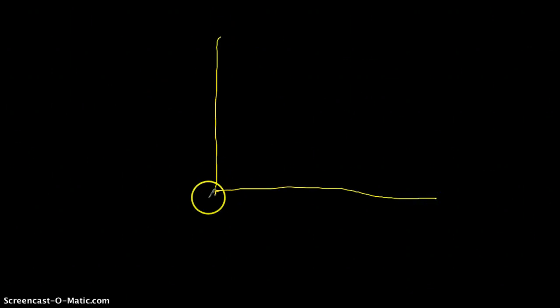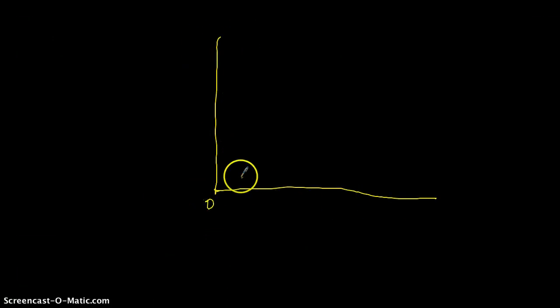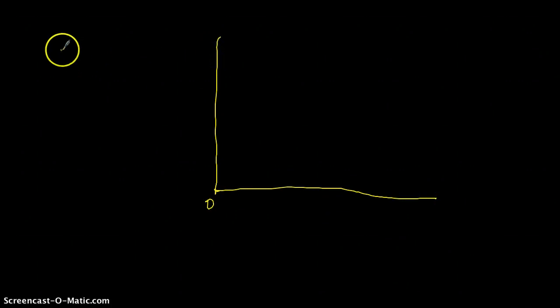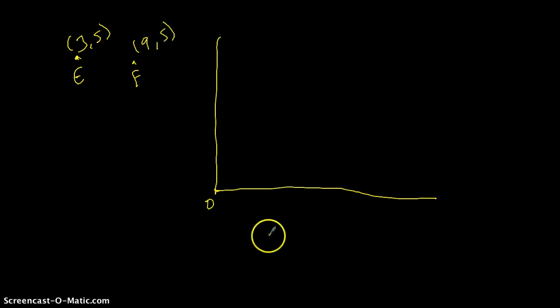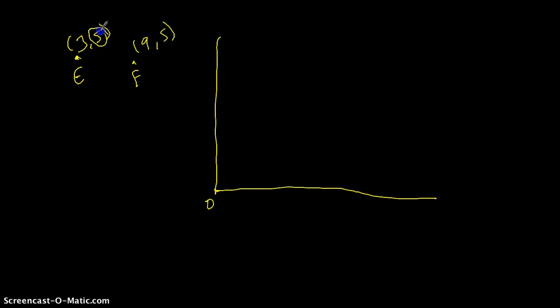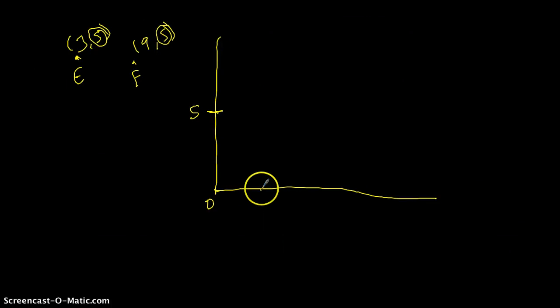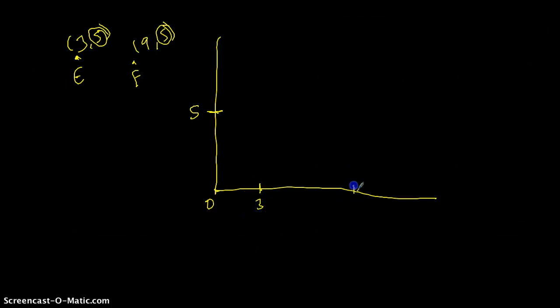Now let's think about another situation — staying in one quadrant. We have our x-axis and y-axis, all positive values in quadrant 1. Point E is located at positive 3, positive 5, and point F is located at positive 9, positive 5. Notice that both points share 5 on the y-axis. On the x-axis, 3 is here and 9 is here.